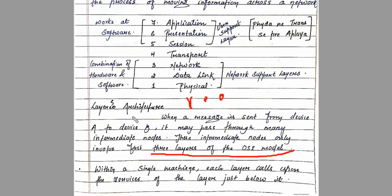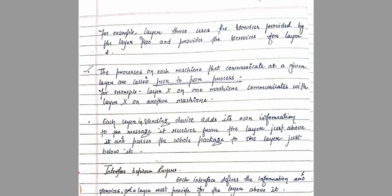As mentioned earlier, intermediate nodes use only three layers of the OSI model. Within a single machine, each layer calls upon the services of the layer just below it. That is, the upper layer of the OSI model uses the services provided by the layer below it.